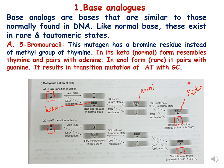Base analogues are bases similar to those normally found in DNA. They are like normal bases and also exist in rare tautomeric states. The first example we are discussing is 5-bromouracil, which is a mutagen that has a bromine residue instead of the methyl group of thymine. 5-bromouracil can exist in keto and enol forms — tautomers, which we have already discussed in part 2 of this lecture series.